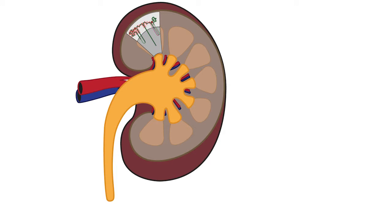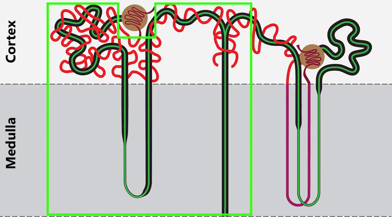When talking about secretion rate, we need to focus on the part of the kidney involved in secretion, and that's the nephron, in particular the tubule.